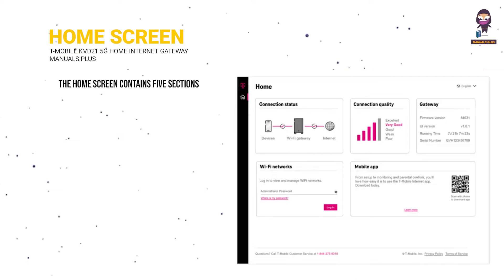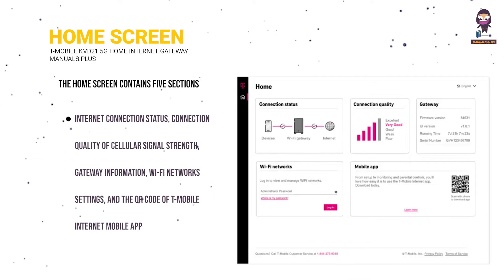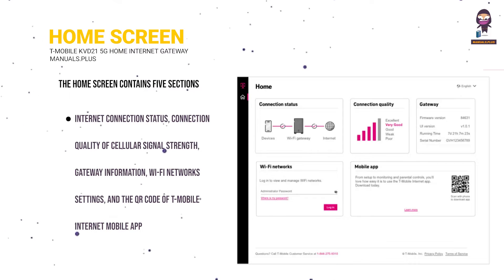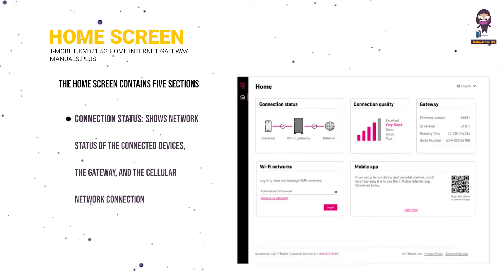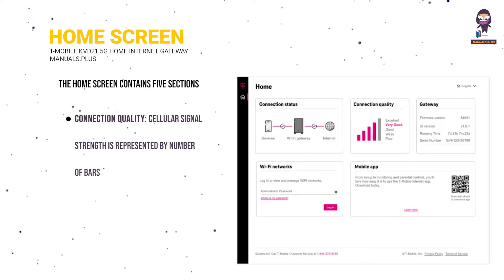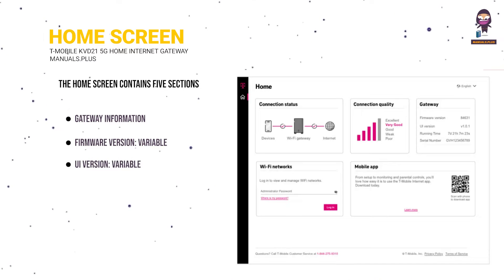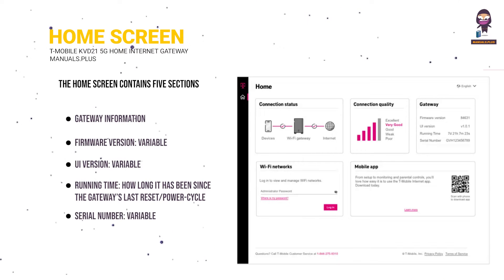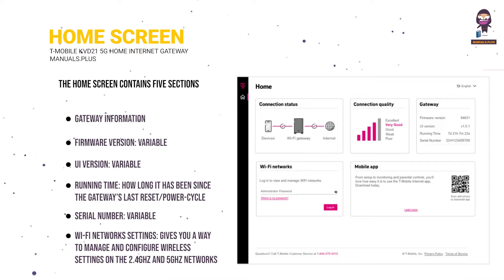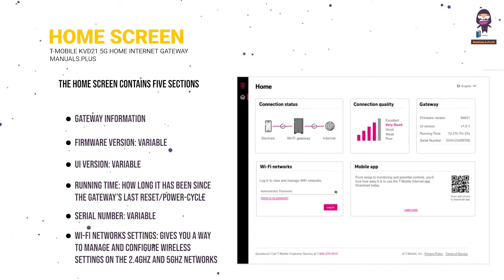The home screen contains five sections: internet connection status, connection quality of cellular signal strength, gateway information, Wi-Fi network settings, and the QR code for the T-Mobile Internet mobile app. Connection quality — cellular signal strength is represented by number of bars. Gateway information includes: firmware version, UI version, running time (how long since the last reset/power cycle), and serial number. Wi-Fi network settings give you a way to manage and configure wireless settings on the 2.4 GHz and 5 GHz networks. Scanning the QR code with your smartphone provides the easiest setup experience.